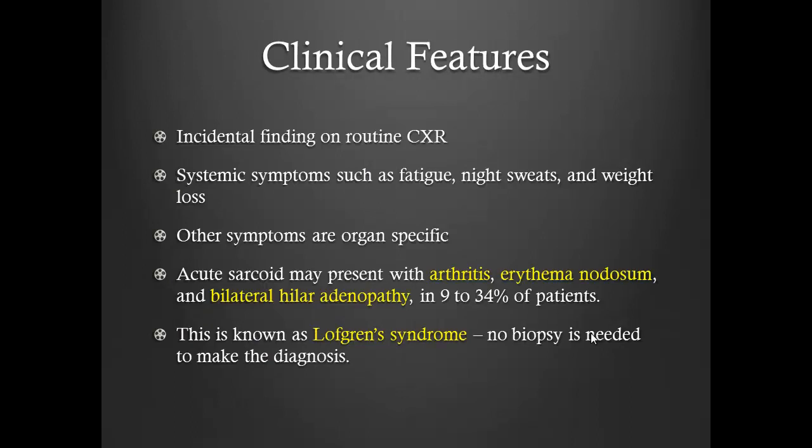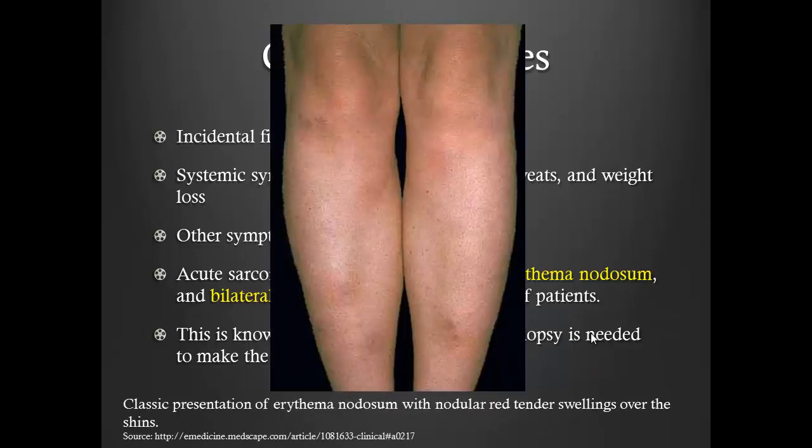Clinically, the vast majority of patients are found incidentally on a routine chest x-ray. Patients can present with systemic symptoms such as fatigue and night sweats — night sweats being the more common one — as well as weight loss. Many symptoms are organ-specific. Lofgren's syndrome is the one case of sarcoid where you don't need a biopsy and can diagnose clinically: erythema nodosum, arthritis, and bilateral hilar adenopathy together constitute a diagnosis of acute sarcoidosis. Erythema nodosum presents as very tender, painful subcutaneous nodules.